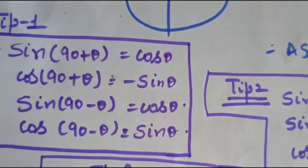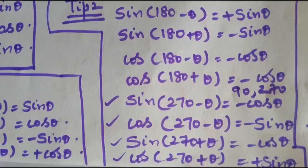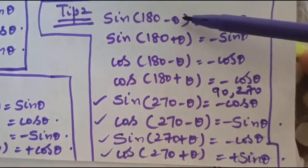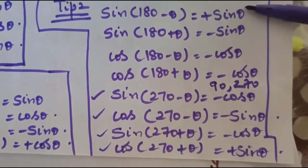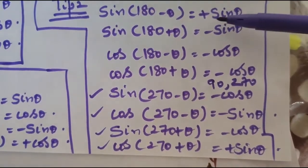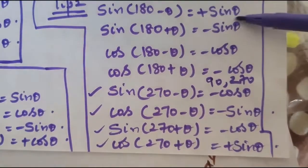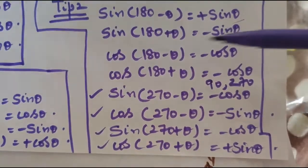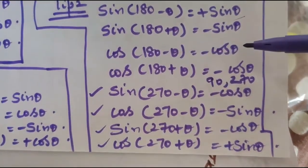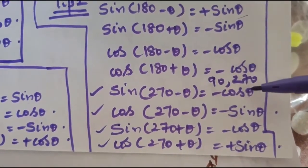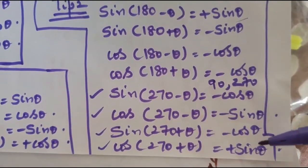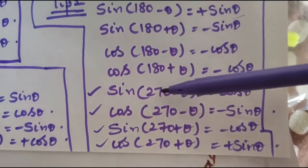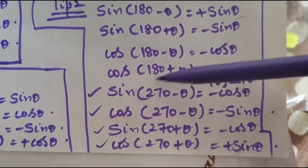Tip number two: for sin(180° − θ), there is no change in the trigonometric ratio — it remains sin θ. For sin(180° + θ), it becomes −sin θ. For cos(180° − θ), it remains cos θ. So for 180°, there is no change in the ratio type, but there will be a change in the ratio for 270°.